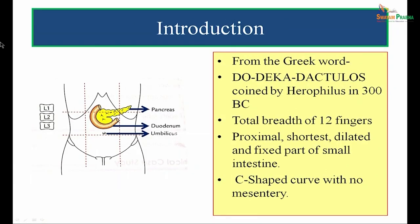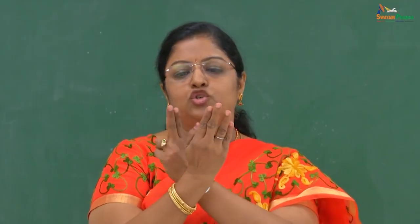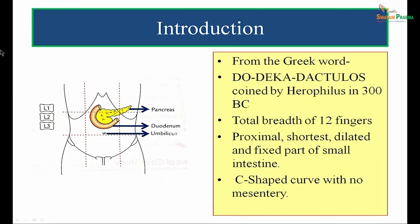Duodenum is derived from the Greek word do-deca-dactylos, coined way back in 300 BC by Herophilus. Do means 2, deca means 10, dactylos means fingers. So do-deca-dactylos means it is equal to the total breadth of 12 fingers — if you count the breadth or width of all 12 fingers, that is equal to the length of the duodenum, which is about 25 centimeters or 10 inches.